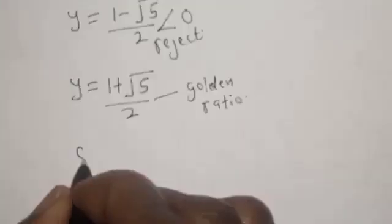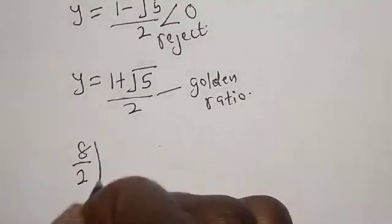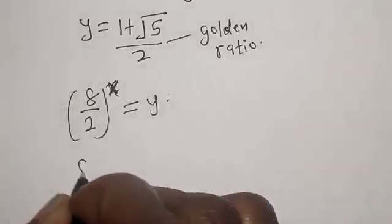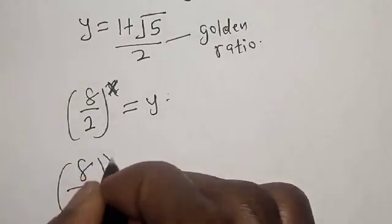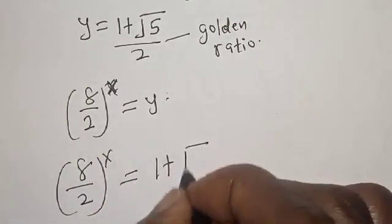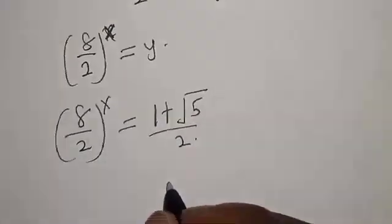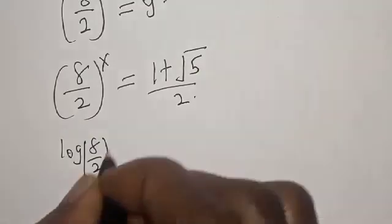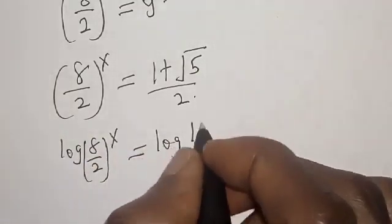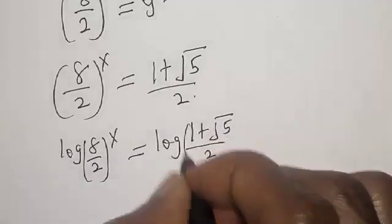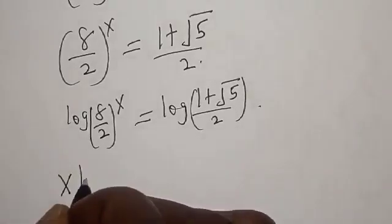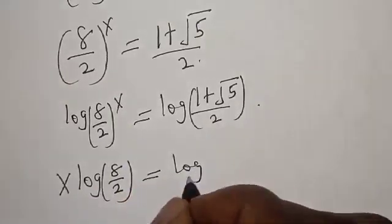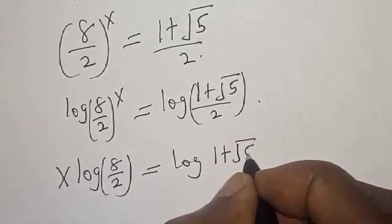Now, remembering that 8 over 2, all raised to power s, is equal to y, we have 8 over 2, raised to power s, equals 1 plus square root of 5 over 2. Taking the log of both sides: s times log of 8 over 2 is equal to log of 1 plus square root of 5 over 2.